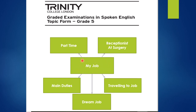You have to have five different aspects of the main topic. For example, for receptionist at surgery: travelling to job, dream job, main duties, part time. Whatever your job is — if you are a teacher, you could write teacher; if you are a driver, write that. In the coming slides we will talk about these five things. The examiner will choose any three of these and ask you questions, so we have to prepare all of them because we don't know which three topics will be chosen.